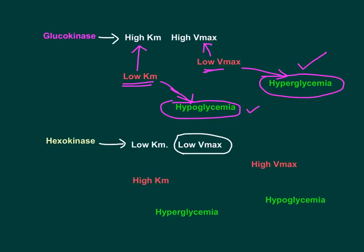For hexokinase: if hexokinase Km changes from low to high while retaining low Vmax, the enzyme becomes less sensitive and is not active until more glucose is present. Peripheral tissues stop consuming glucose normally, glucose accumulates in the bloodstream, and this gives rise to hyperglycemia.